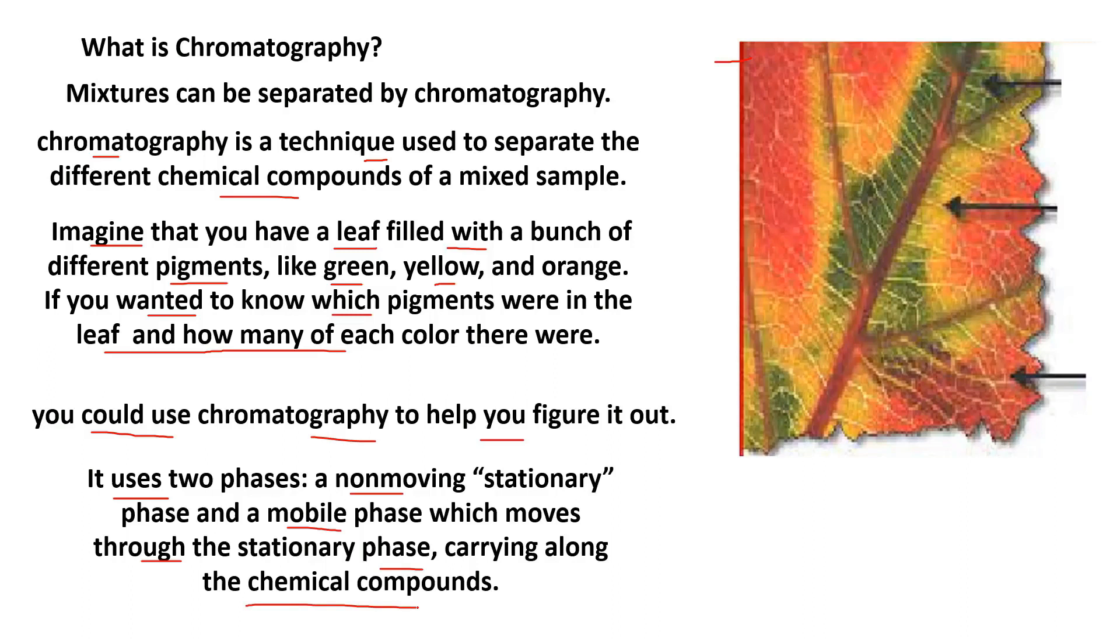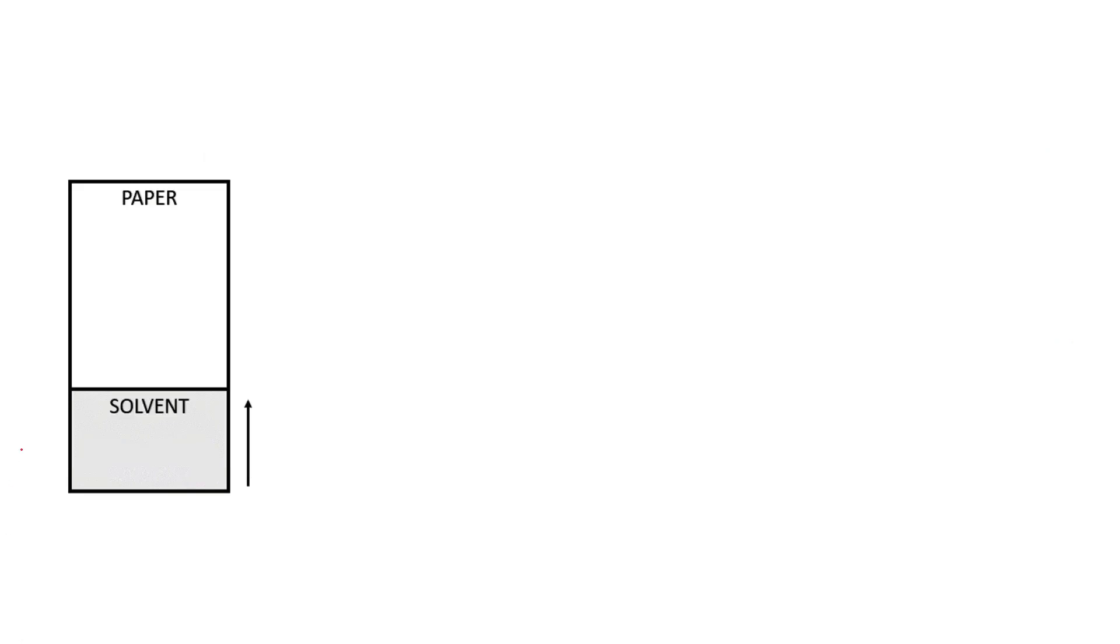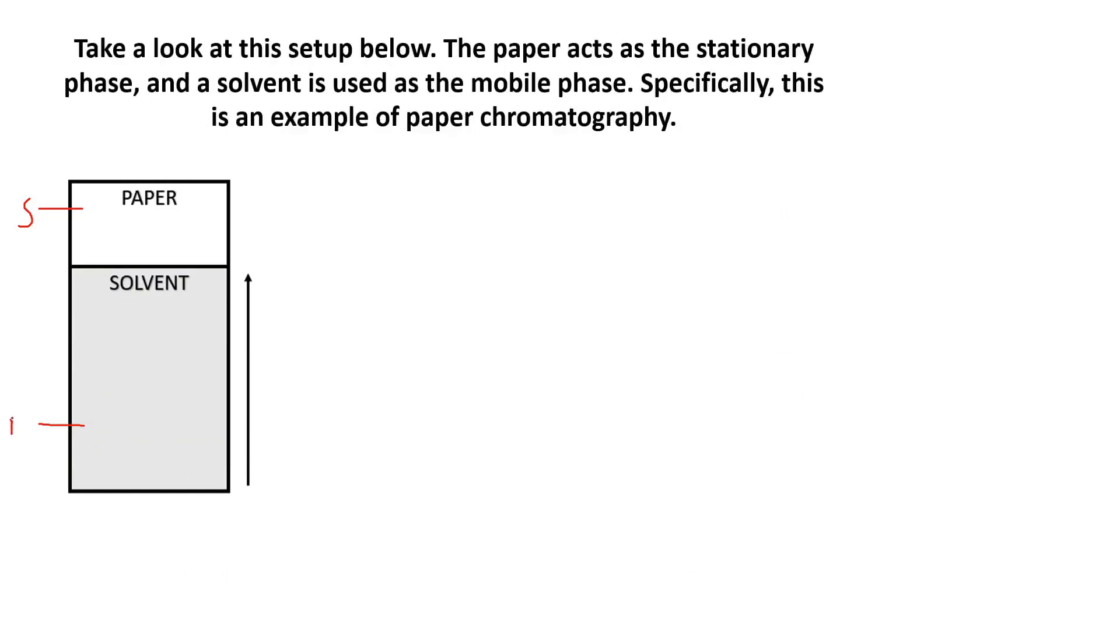One is stationary phase and the other is mobile phase. Now, where you see the paper, that is the stationary phase. And the solvent moving up, I'm marking it with M, that is the mobile phase, dear students. The paper is stationary phase and the solvent is mobile phase.